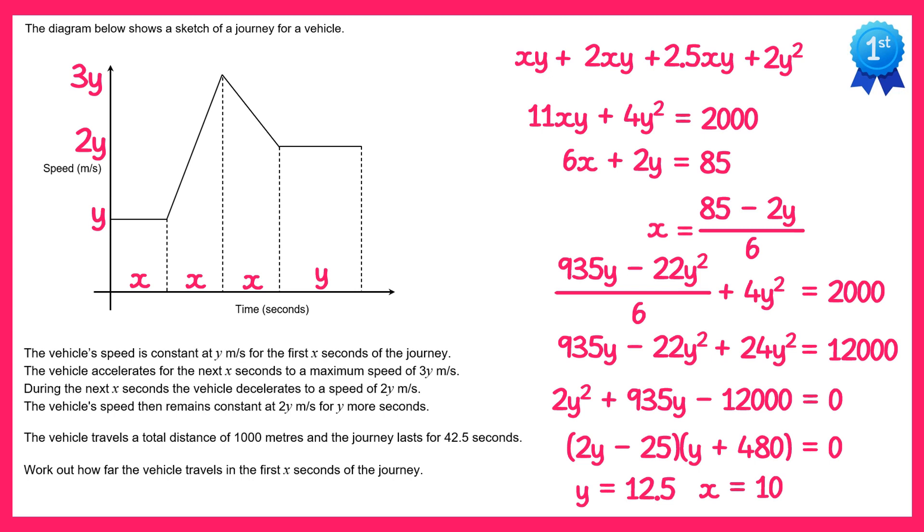Now in the question we were asked to find out how far the vehicle travels in the first x seconds of the journey. Well the first x seconds is this section here, and again to find the distance we just find the area under the graph. So we just need to multiply x by y. Now that we know x and y it becomes quite straightforward: 10 times 12.5 is 125 metres. And that's your answer to the question.